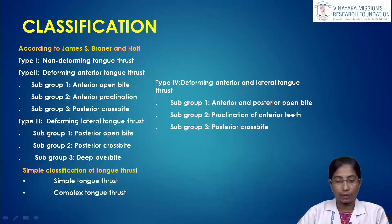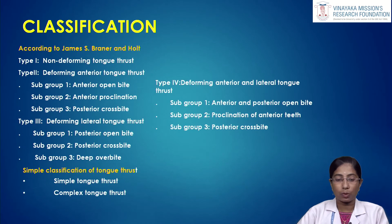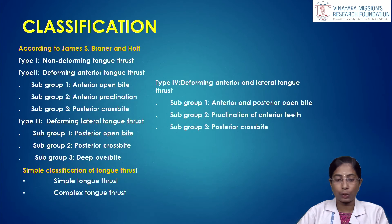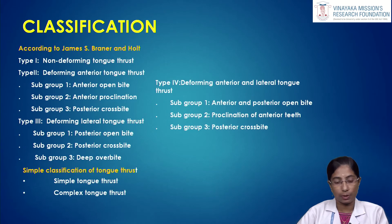According to James, tongue thrusting is classified into four types. Type 1 is non-deforming tongue thrust. Type 2 is deforming anterior tongue thrust, further classified into subgroup 1 (anterior open bite), subgroup 2 (anterior proclination), and subgroup 3 (posterior cross bite). Type 3 is deforming lateral tongue thrust, further divided into subgroup 1 (posterior open bite), subgroup 2 (posterior cross bite), and subgroup 3 (deep overbite).